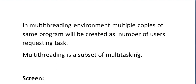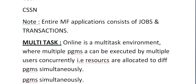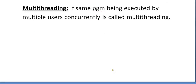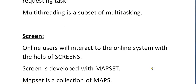In a multi-threading environment, multiple copies of the same program are created equal to the number of users requesting tasks. Multi-threading is a subset of multi-tasking. Online is a multi-tasking environment where multiple programs can be executed by multiple users concurrently, with resources allocated to different programs simultaneously — that is why multi-threading is a subset of multi-tasking.